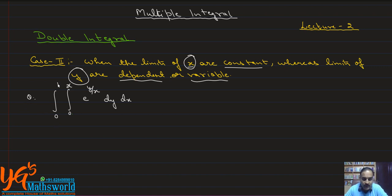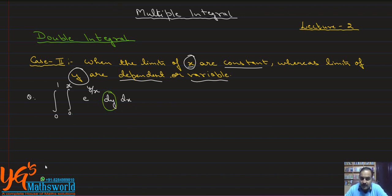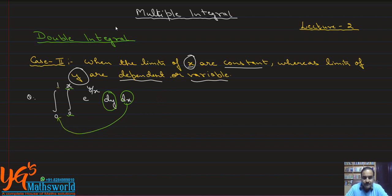The question is: integrate from 0 to 1, and from 0 to x, e raised to the power y over x, dy dx. Clearly, we have to integrate first with respect to y, and the limits are in terms of x, whereas the limits for dx are constant from 0 to 1.